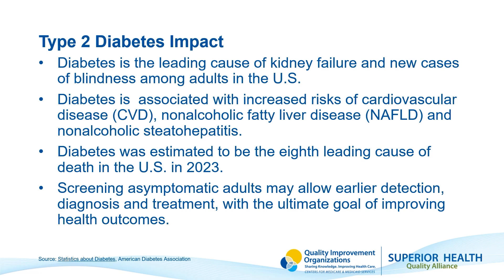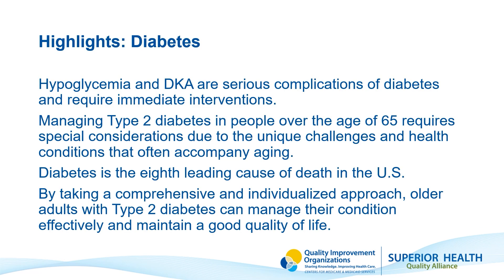In summary, hyperglycemia, hypoglycemia, and DKA are serious complications of diabetes that require quick and immediate action. DKA requires hospitalization. Managing type 2 diabetes for those over the age of 65 does have unique challenges, but it can still be done. Diabetes is the eighth leading cause of death in America in 2023. By taking an individualized approach, older adults with type 2 diabetes can manage their condition effectively and maintain a great quality of life.